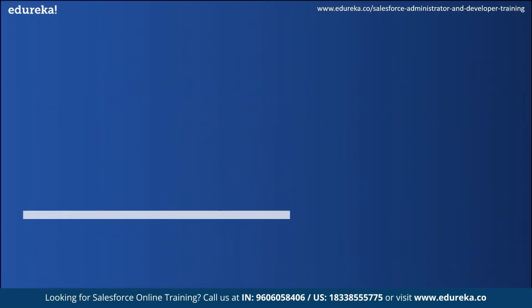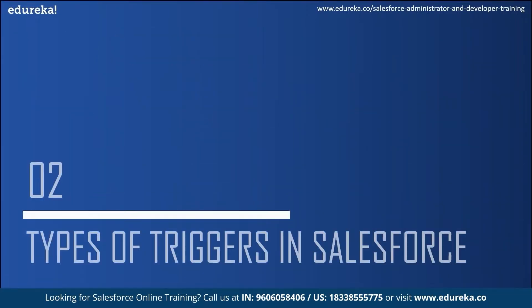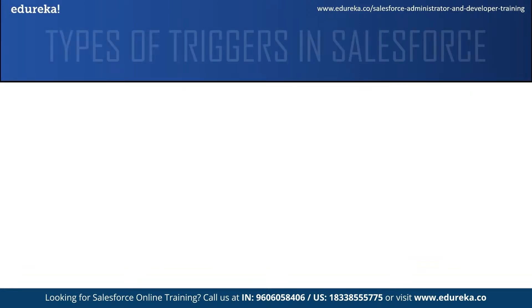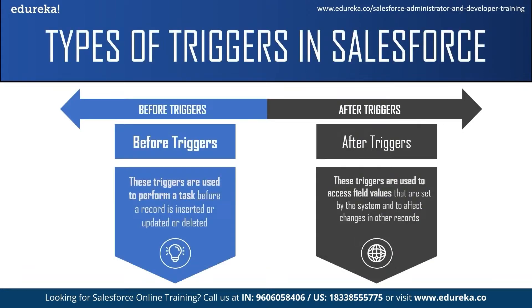Now let us move on to the types of Salesforce triggers. Basically there are two types: the before trigger and the after trigger. Before triggers are used to perform a task before a record is inserted, updated, or deleted. These triggers are usually used to update or validate record values before they are saved to the database.